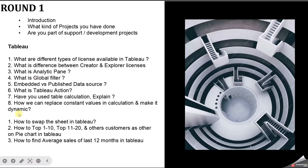The next question was: how can we swap sheets? I have already uploaded a video on that in my Tableau scenario-based question series — I will provide the link in the description box. The next question was: how to find top 1–10, top 11–20, and other customers as 'Others' on a pie chart. The third question was: how to find the average sales of the last 12 months. Both are explained in the same playlist — link in the description.